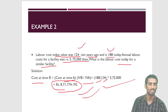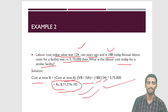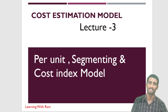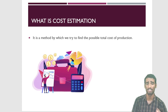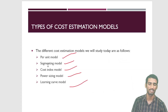I will also provide the whole slide to my WhatsApp group. If you haven't joined the group for free notes and various important content, then must join that group. This is the end of the session. Let us come to the summary. We have discussed three important models: the per unit model, the segmenting model, and the cost index model. First, cost estimation means to estimate the cost of a project.